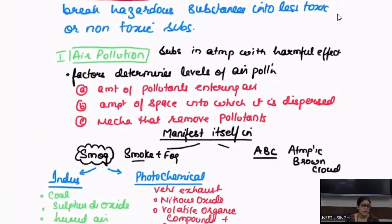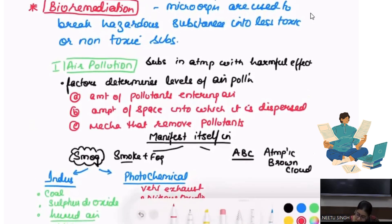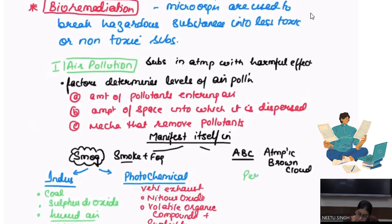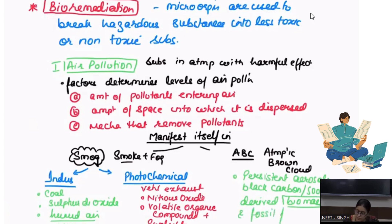When I talk about Atmospheric Brown Cloud, I need to understand it correlates with persistent aerosols. Aerosols are the collective term denoting suspended particulate matter — solid particles so small in size that they defy gravity and remain suspended. It is persistent aerosol identified as black carbon, also called soot particles, largely derived from burning of biomass along with fossil fuel combustion.